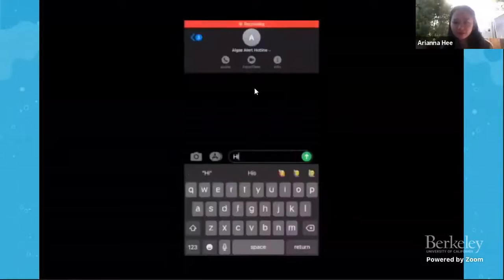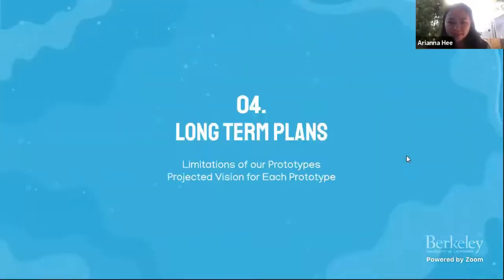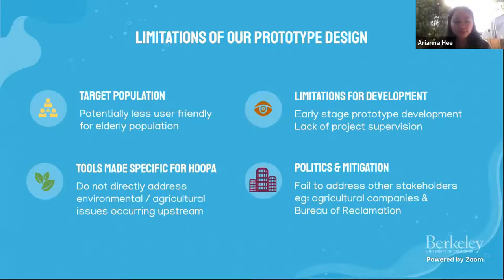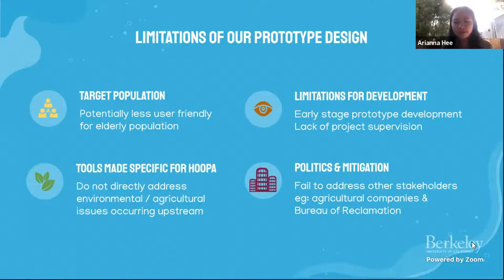For our long-term plans, we'll discuss some limitations of our prototypes and then go into projected visions. Currently, the hotline and game app are both education tools made specifically for the Hoopa Valley Tribe. However, there is potential for minimal engagement with the tribe's elder population due to reduced familiarity with technology. Our prototyping is still in early-stage development since we revised our how-might-we. Additionally, these tools don't address the environmental issues upstream — including the flow of cyanotoxins — nor the political issues involving agricultural businesses and the Bureau of Reclamation.